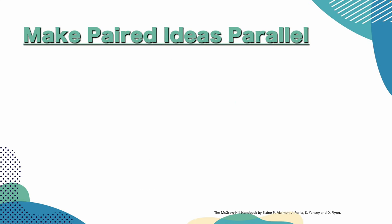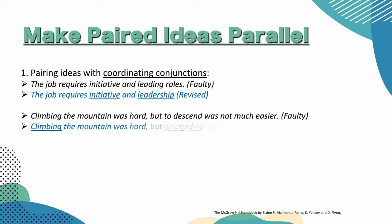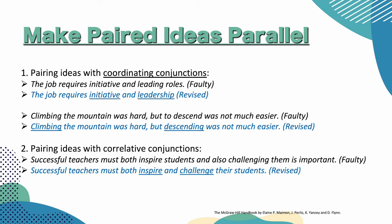Make paired ideas parallel. Pairing ideas with coordinating conjunctions. The job requires initiative and leading roles — that's faulty. It's better to write: the job requires initiative and leadership, right? To make the sentence consistent, I added the noun 'leadership.' Another sentence: climbing the mountain was hard, but to descend was not much easier — so this is faulty. The sentence started with an -ing verb, and then we have an infinitive 'to' verb. So let's make it into an -ing verb: climbing the mountain was hard, but descending was not much easier. It sounds much better this way.